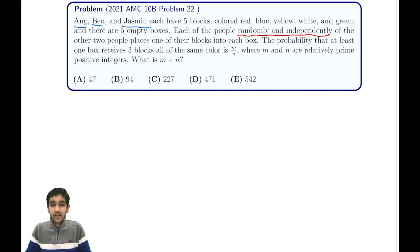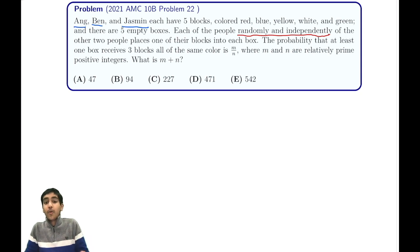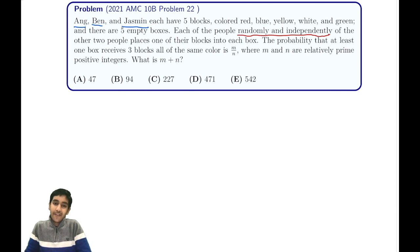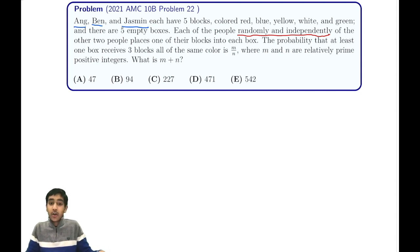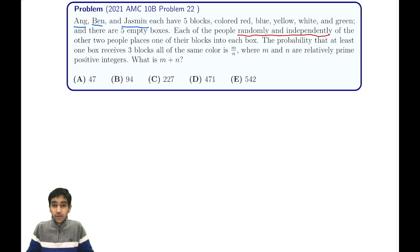One way to count these possibilities is casework, but that would be a little complicated because you'd have to subtract cases carefully to avoid double-counting. Another way, which I think is a little bit easier, is to use the Principle of Inclusion-Exclusion (PIE). If you don't know what that is, you can check out the numerous AMC 10/12 videos on this channel.